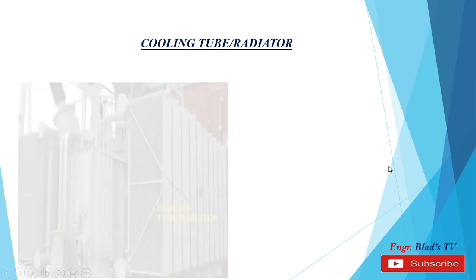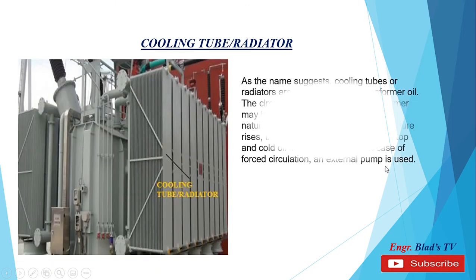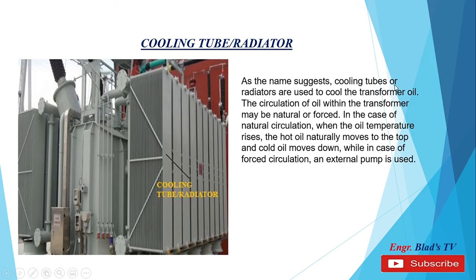Cooling tube or radiator. Cooling tubes or radiators are used to cool the transformer oil. The circulation of oil within the transformer may be natural or forced. In the case of natural circulation, when the oil temperature rises, the hot oil naturally moves to the top and cold oil moves down. While in the case of forced circulation, an external pump is used. In this picture we can see the cooling tube or radiator, sometimes called cooling fins.